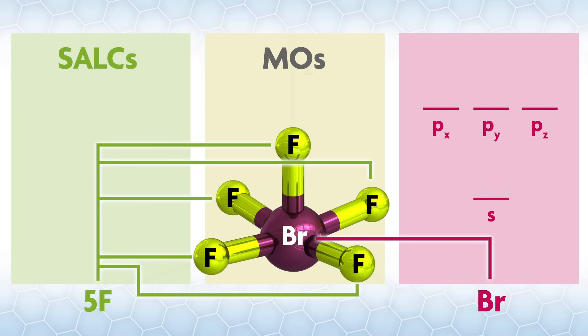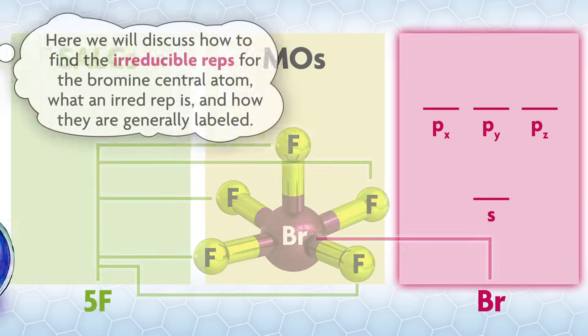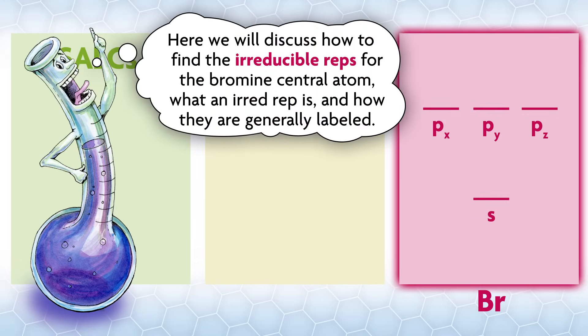Bromine is a central atom that sits where all asymmetry operations meet. We will make the bromine one side of our MO diagram. Here we'll discuss how to find the irreducible reps for the bromine central atom, what an irreducible rep is, and how they are generally labeled.